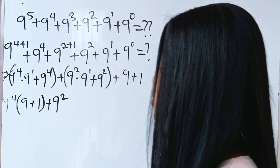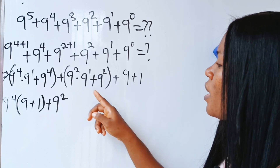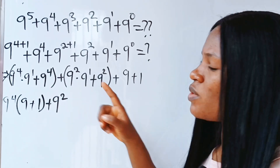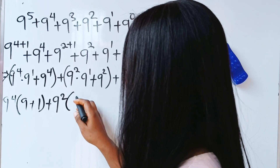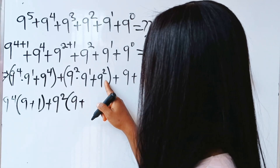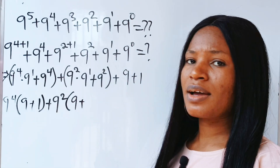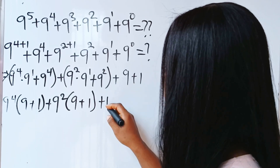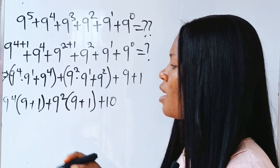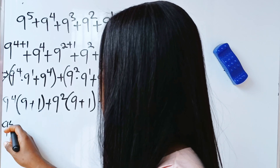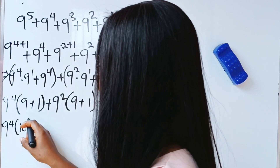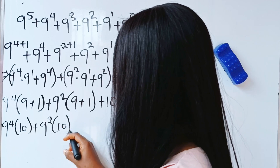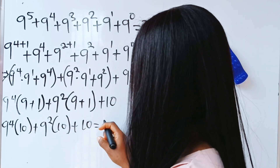Now we factorize 9 to the power of 2 out. When this is divided by 9 squared we cancel and are left with 9 to the power of 1. So we have 9 plus 9 squared divided by 9 squared gives us 1, plus 9 plus 1 gives us 10. So we have 9 to the power of 4 times 10, plus 9 to the power of 2 times 10, plus 10.